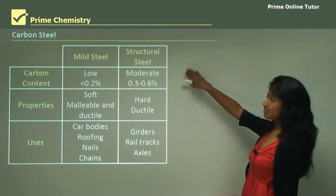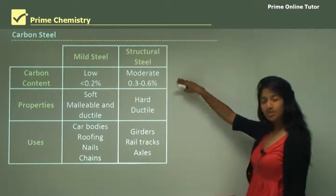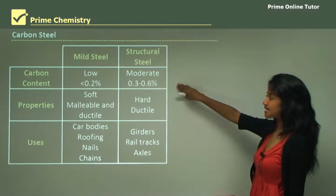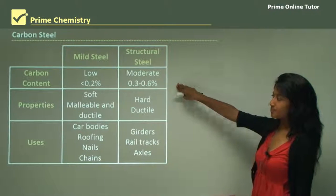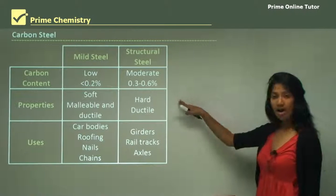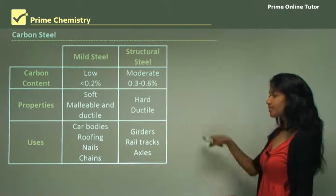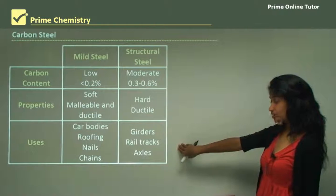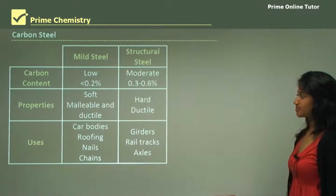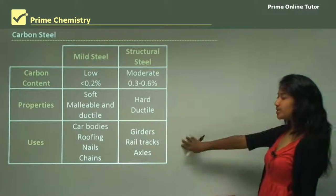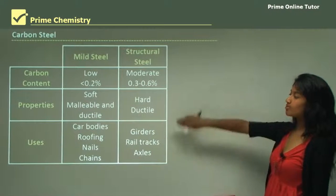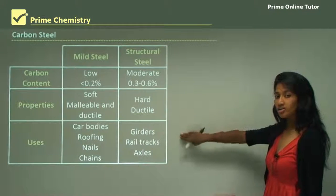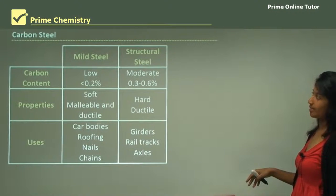Then comes structural steel. It has a moderate carbon content of 0.3 to 0.6%, and properties include hardness and ductility. The uses are girders, rail tracks, and axles. It is always important to relate your properties and uses so they correspond to one another when you're listing them.